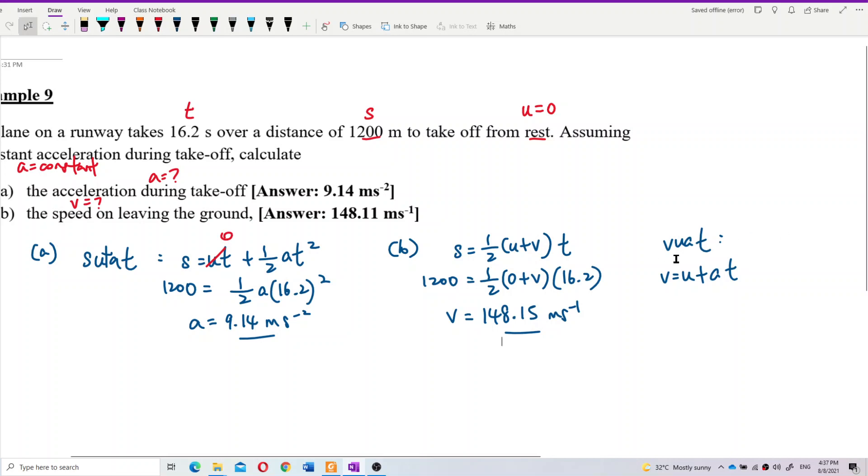Or if we use this formula VOAT, V equal to U plus A T, we surely get the same answer. U, initial velocity, 0. Acceleration, just now we got 9.14. And time taken is 16.2. Let's calculate. Do we get the same answer? Yeah, exactly. The same answer.